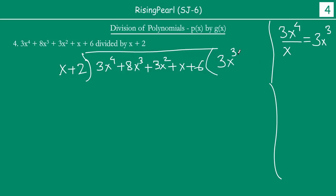3x cube. Now we multiply 3x cube by all the terms here. So 3x cube times x will give you 3x to the power 4. And then 3x cube times 2 will be 6x cube. So we will subtract it. This will get cancelled. 8x cube minus 6x cube is going to give you 2x cube. And then all these terms also will come down straight. So let's write. Plus 3x square, plus x, plus 6.